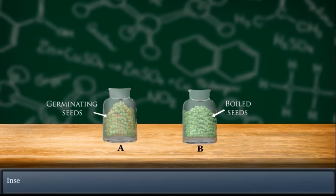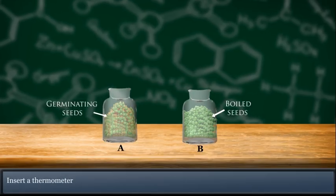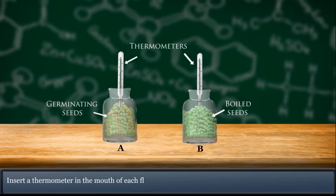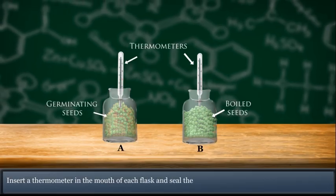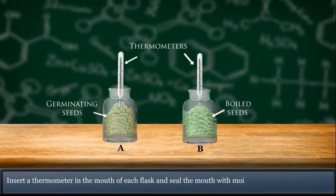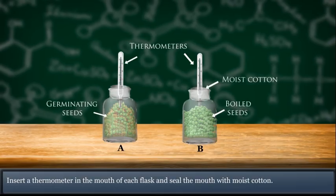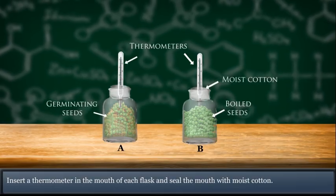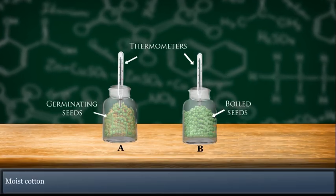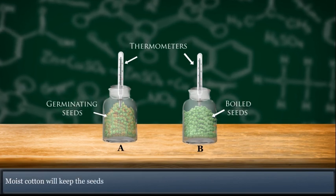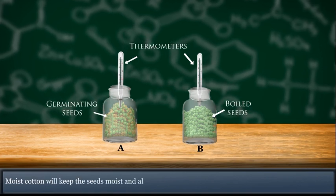Insert a thermometer in the mouth of each flask and seal the mouth with moist cotton. Moist cotton will keep the seeds moist and also allow air to enter the flask for respiration to take place.